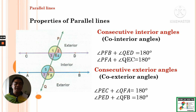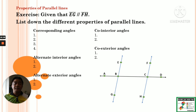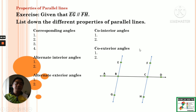I hope you understand our lesson today about the different properties of parallel lines. Now I have an activity for today. Given that line EG is parallel to line FH and transversal line AD crosses the two parallel lines, list down the different properties: the four corresponding angles, two alternate interior angles, two alternate exterior angles, two co-interior angles, and two co-exterior angles. Fill in all the different properties from the figure. If you don't have any questions, that's all for today. See you next time, bye bye!